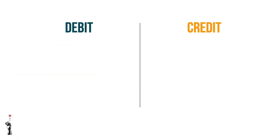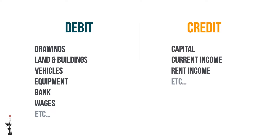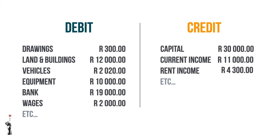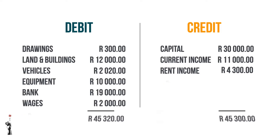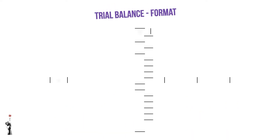All the debit entries will be recorded on the debit side and all the credit entries will be recorded on the credit side. The total of the debit side must equal the credit side. If it does not, then the bookkeeper has to go back and check where the possible errors could be.